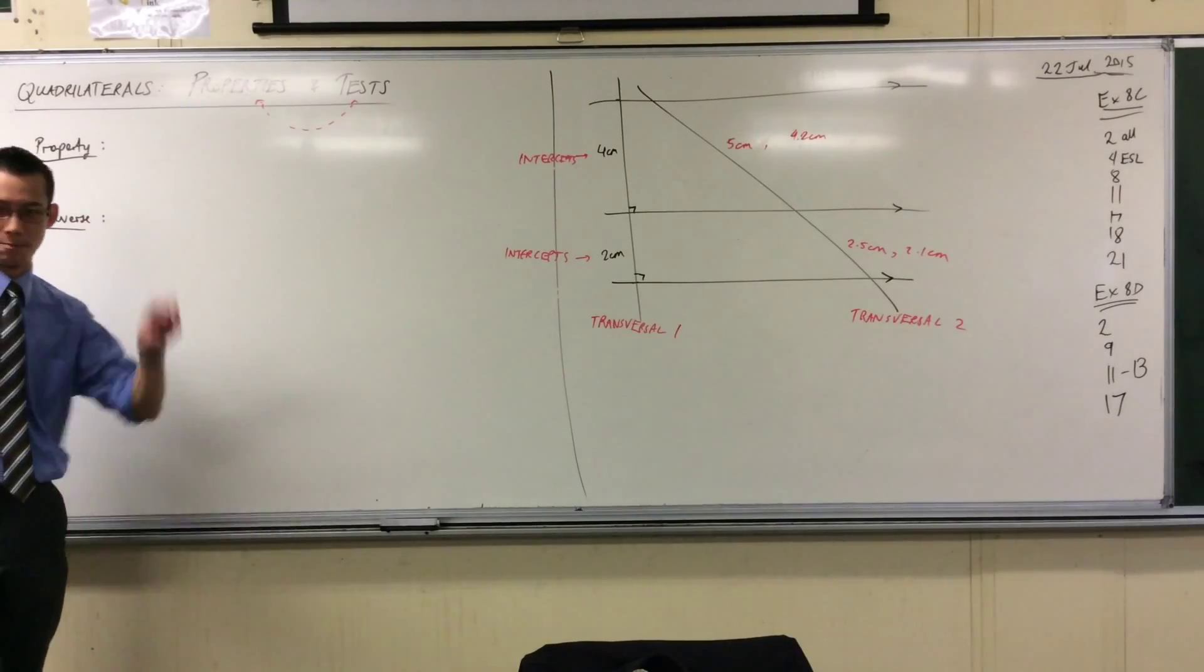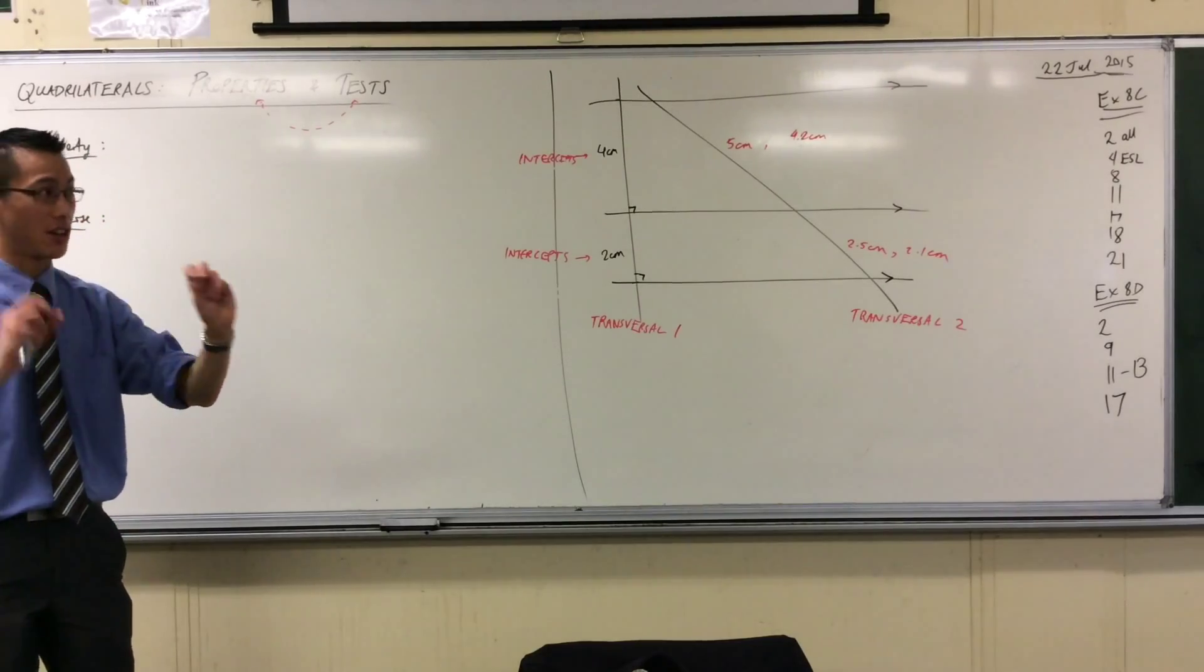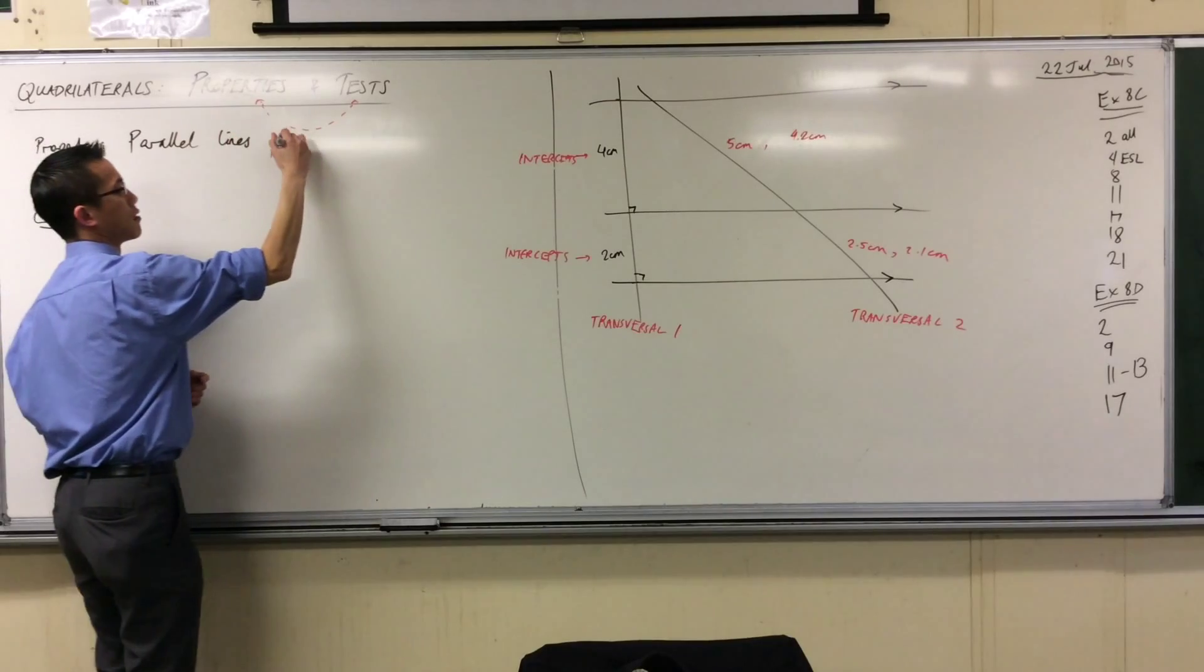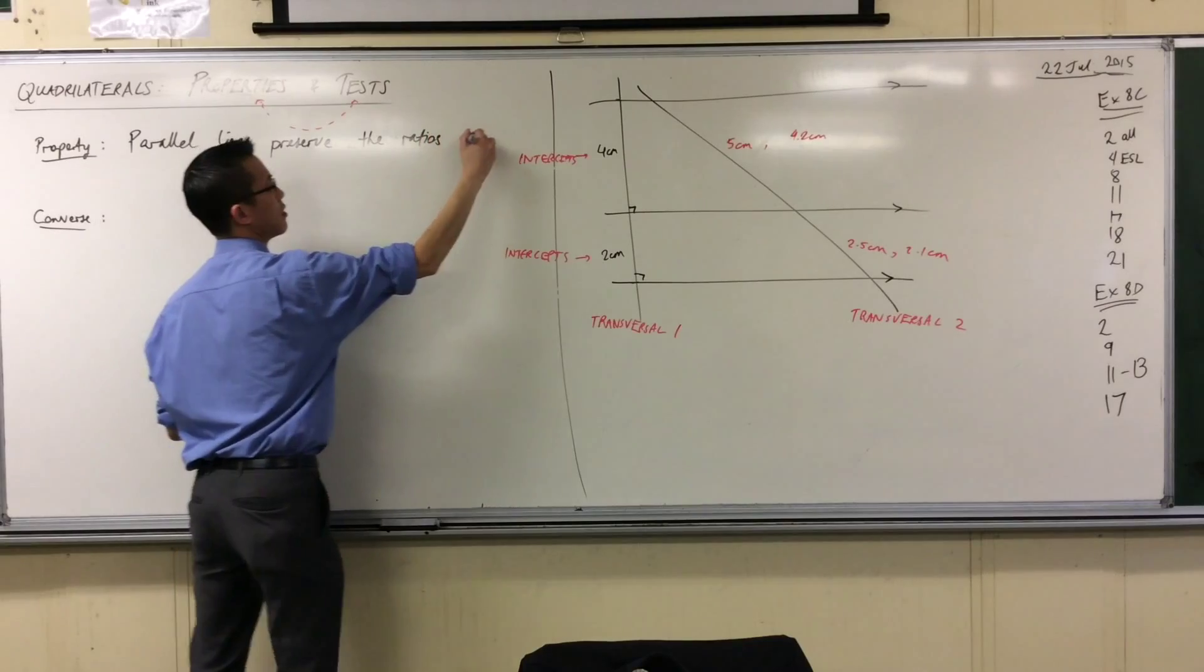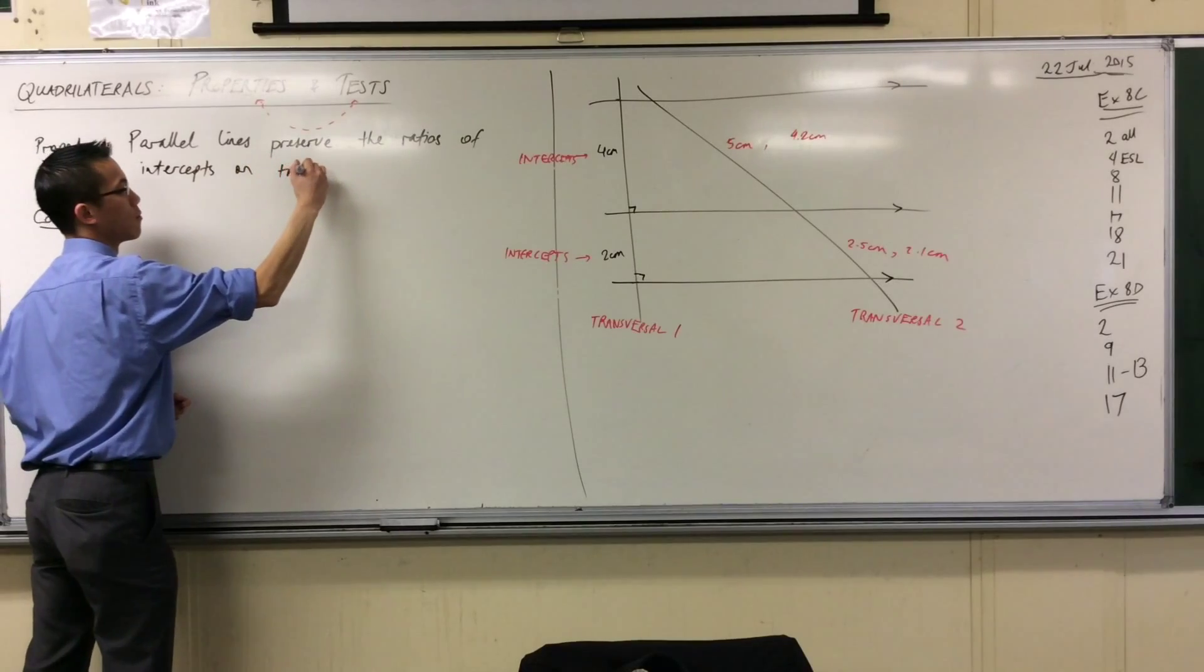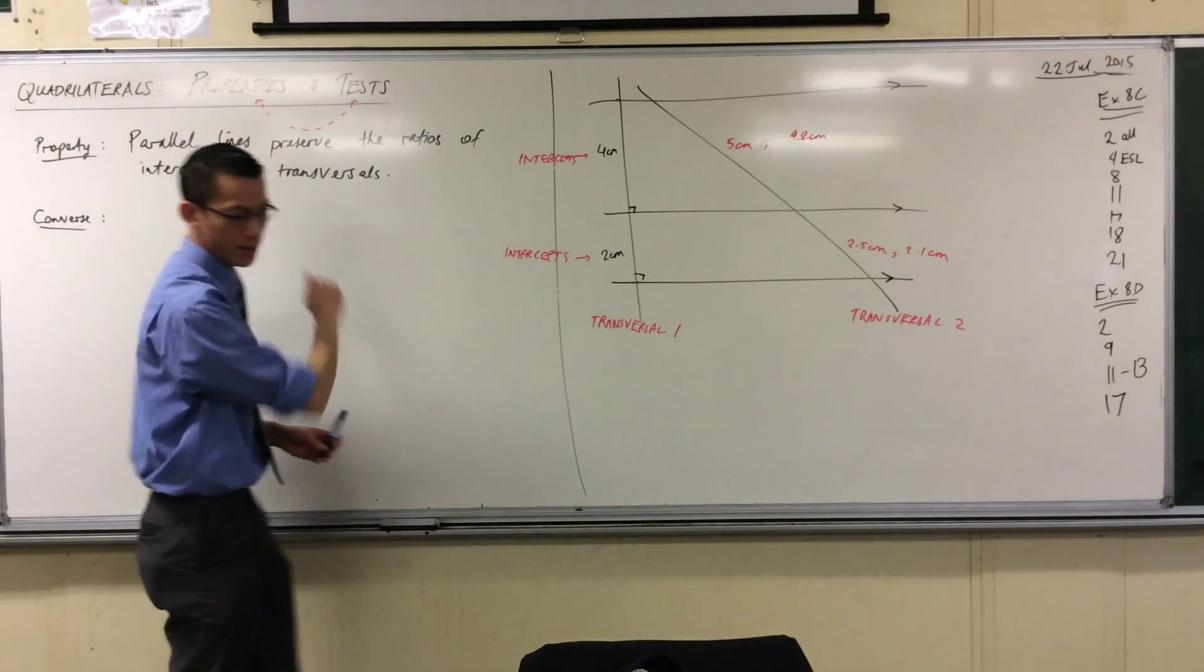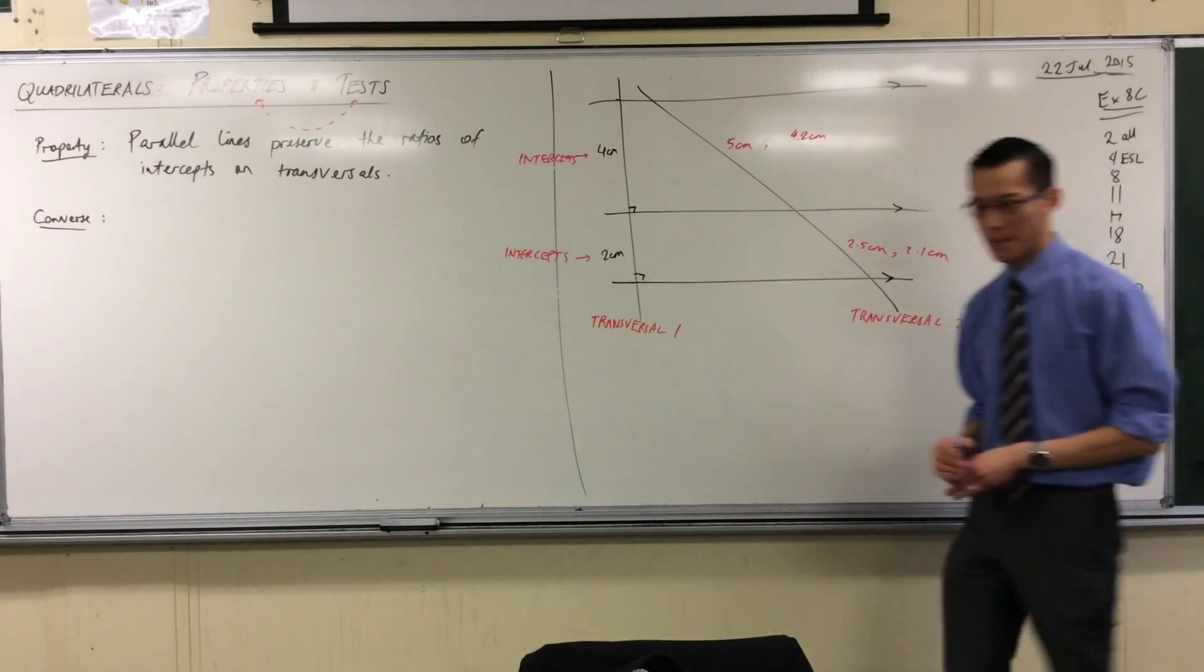Let me give you the textbook statement, like articulation of this property. You ready? Here we go. Parallel lines preserve the ratios of intercepts on transversals. Nine words. It's not bad.